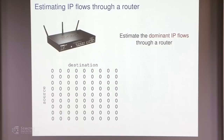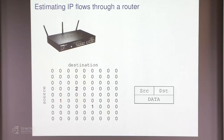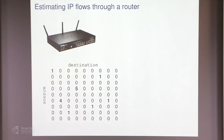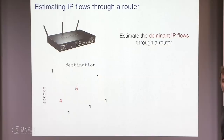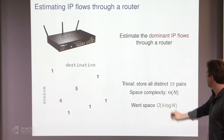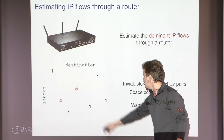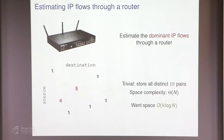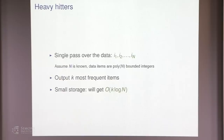A classical application is estimating IP flows through a router. The source-destination pairs are observed by the router, and instead of trying to understand how many distinct pairs are communicating, the router wants to know which source-destination pairs contribute the bulk of the traffic. For instance if k is 2, we want to know that there's a pair that communicated 5 packets and another that communicated 4 packets, and we want space complexity on the order of k log n.